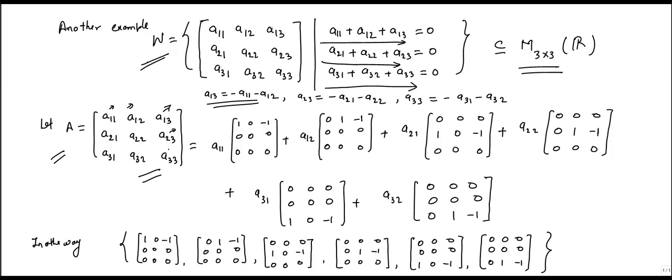Similarly, entry a23 we can generate using entries a21 and a22. Similarly, entry a33 we can generate using the third condition. This can be generated by entries a31 and a32.